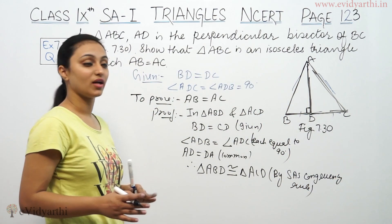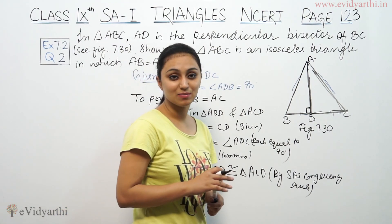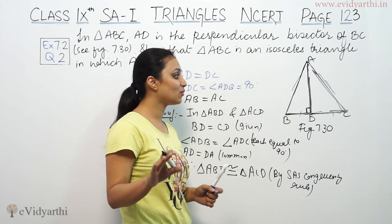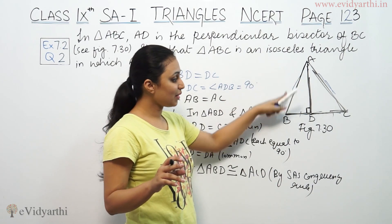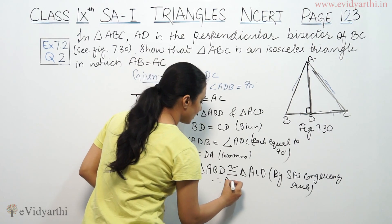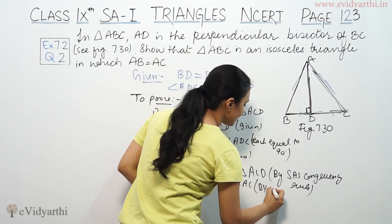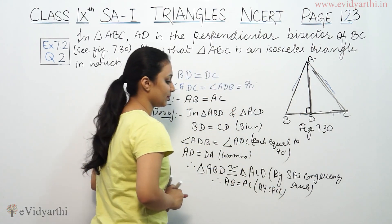So those two triangles are congruent. That means the corresponding parts, side AB equal to side AC. Therefore AB will be equal to AC by CPCT. Hence proved.